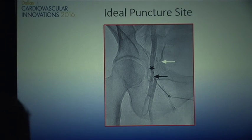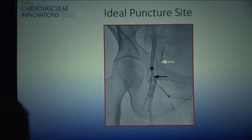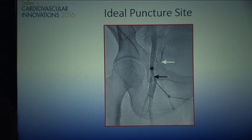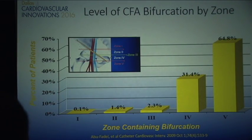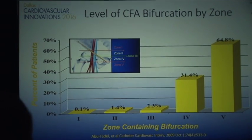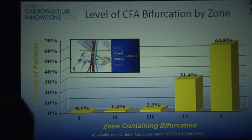The ideal access site is right in the middle of the head of the femur. Sometimes we have high bifurcations — I advise everyone to go back and look at the previous access site angiogram because it can help you know what to expect. If you absolutely have to go femoral and you see something like this, you probably need ultrasound. A lot of patients have their bifurcation at or even above the middle of the head of the femur, and you cannot predict this without a previous angiogram.